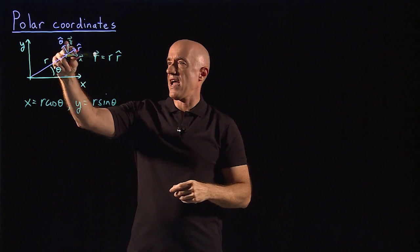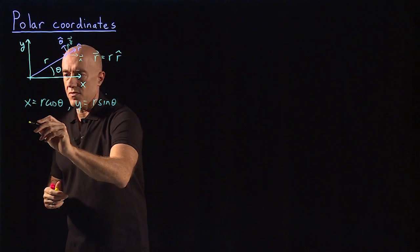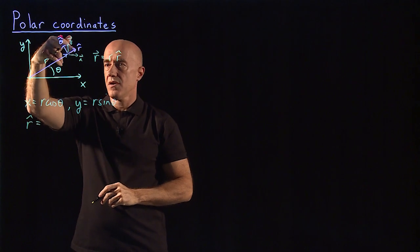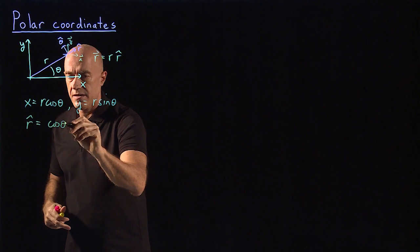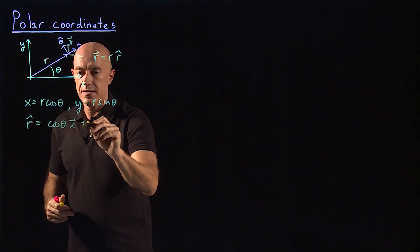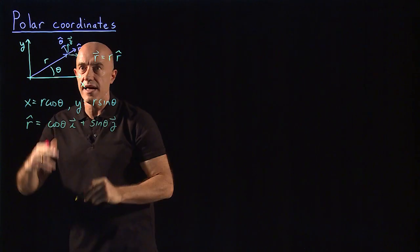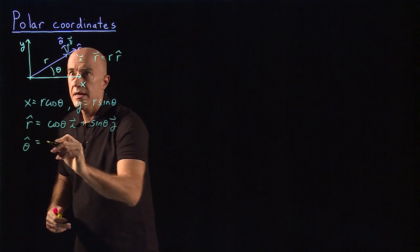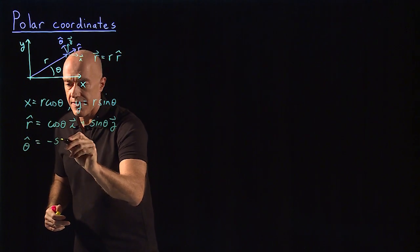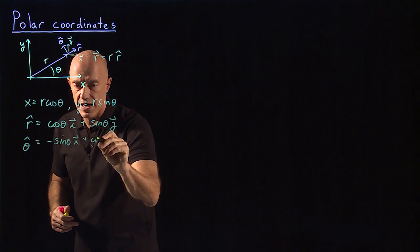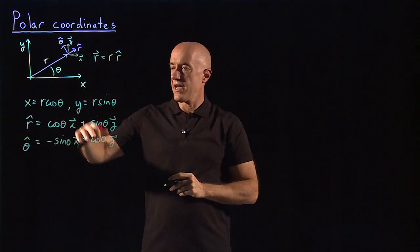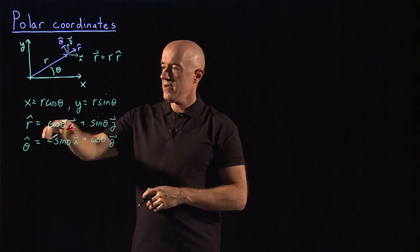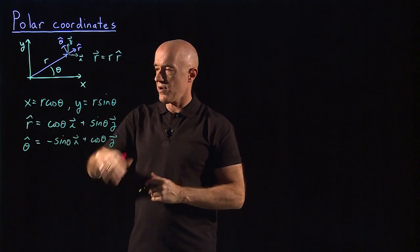What is the relationship between r hat, theta hat, and i and j? We can write r hat as equal to cosine theta times i plus sine theta times j — that's just some trigonometry. The other unit vector theta hat is minus sine theta times i plus cosine theta times j. As we see, r hat is a function of theta. i and j are independent of where you are, but r hat is a function of theta, and theta hat is also a function of theta.